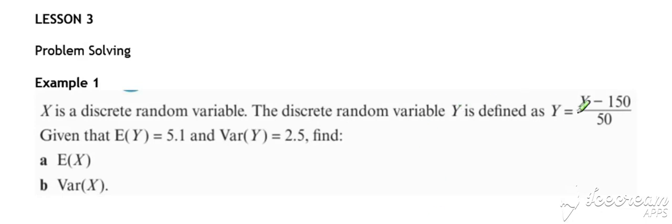In this first example we've got a function of X, so Y the function of X. And we've been told the expected value and the variance of that function of X, so expected value and variance of Y. We need to work backwards from that to find the expected value of X and the variance of X.